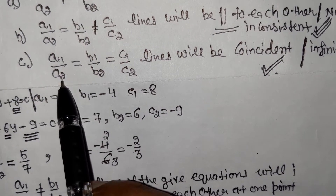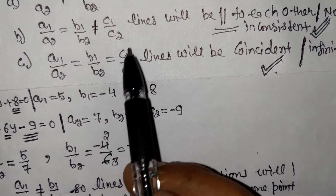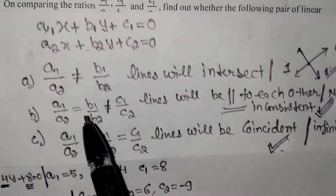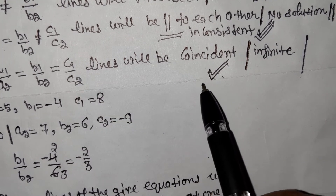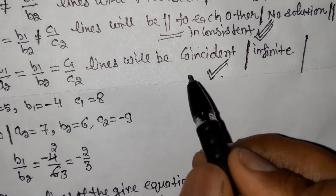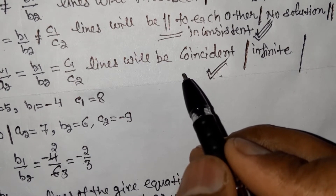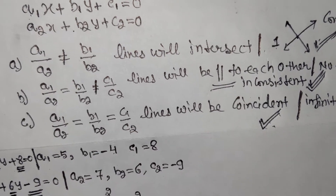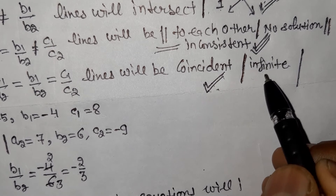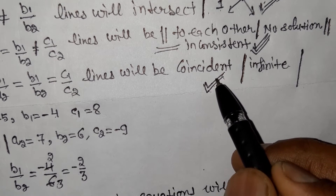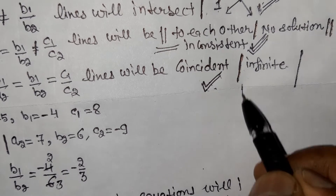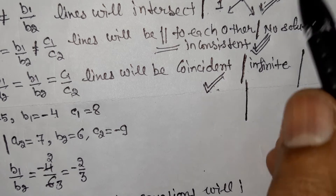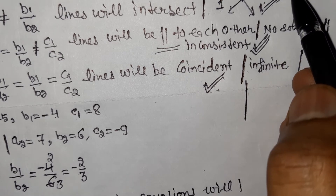The third case: if A1/A2 is equal to B1/B2 and also equal to C1/C2, the pair of lines are coincident. They are infinite solutions — the lines overlap completely. This case is consistent with infinitely many solutions.